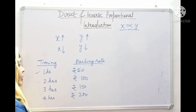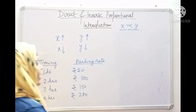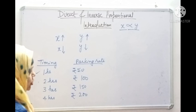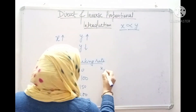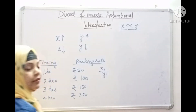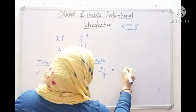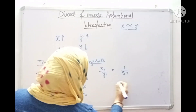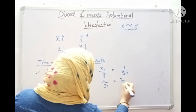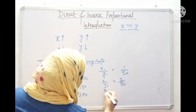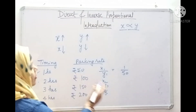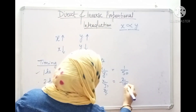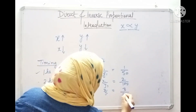Now let's find out the ratio. In direct proportion, it is denoted by x1 by y1. So here, for one hour: 1 by 50. For two hours: 2 by 100. For three hours: 3 by 150. For four hours: 4 by 200.